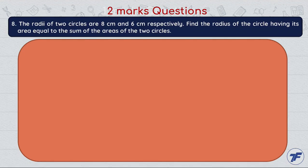Here let us solve the next question, question number 8. The radii of two circles are 8 centimeter and 6 centimeter respectively. Find the radius of the circle having its area equal to sum of the areas of the two circles.